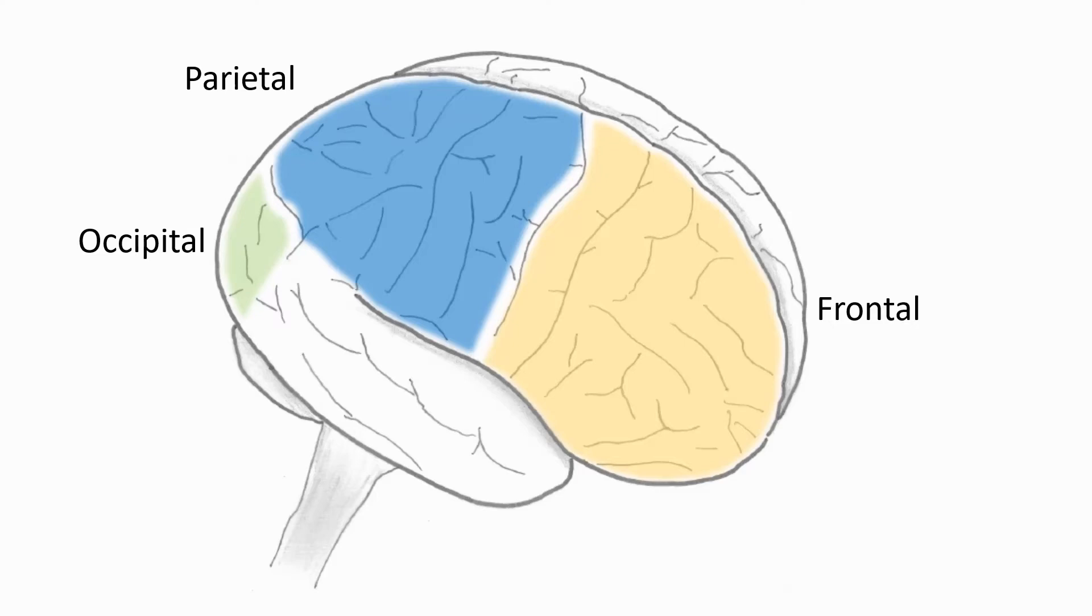And at the sides we have our temporal lobes, important for memory, but also containing auditory cortex, cortex for processing what we hear.